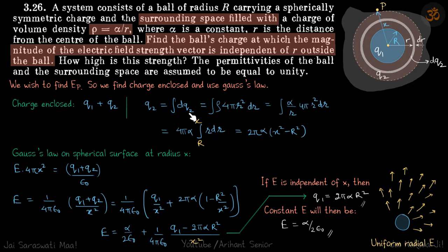So q2 is equal to integral dq2. This integral dq2 is because of the shell. It will be ρ into 4π r² dR and ρ is given as α by R. Integrate it from R to x and this is our q2.